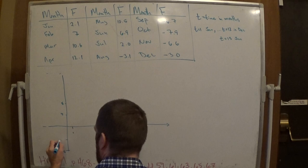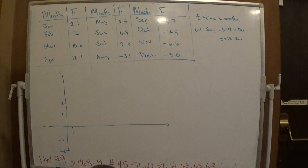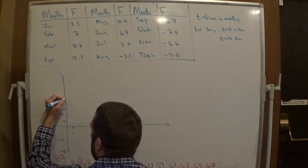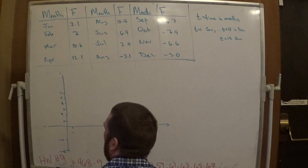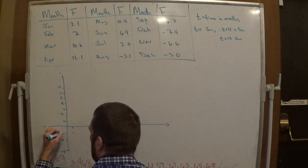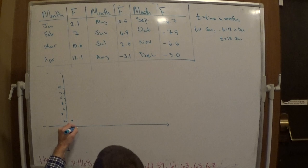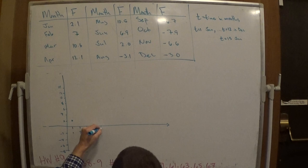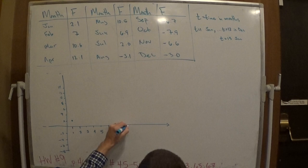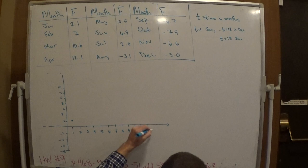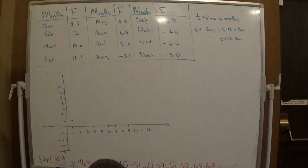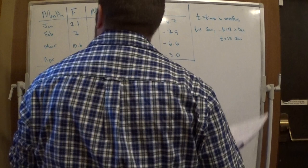Now to find B: the period is 12, and the period equals 2 pi over B. So B equals 2 pi over 12, which reduces to pi over 6. That's nice — we can actually work with that. Now we just need C. The nice thing about how we've defined things: we're going to say January — which is at T equals 1 — is at 2.1, which we'll call 2. And that's where sine begins, at the midline going upward. If they wanted cosine, that would be the peak at month 4.